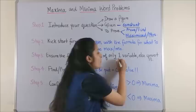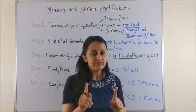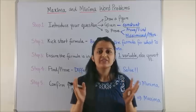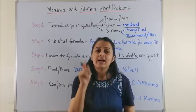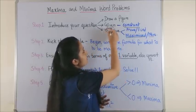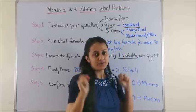Step 3: ensure that the formula is in terms of only one variable. You know you have been differentiating only with respect to one variable at this level, so you have to be very sure that the formula which you have written is actually catering to only one variable. If not, then you would refer to the given condition and convert it in terms of one variable.